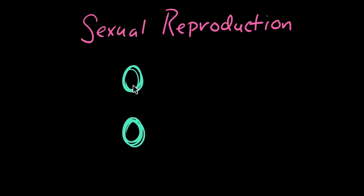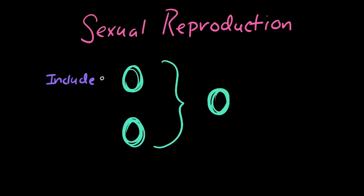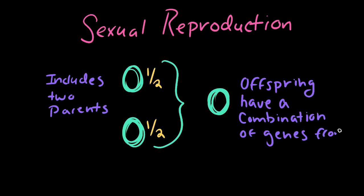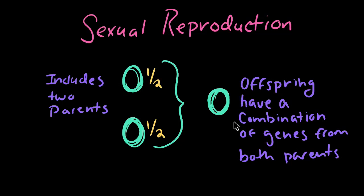Now that we've covered asexual reproduction, let's move on to sexual reproduction. Unlike asexual reproduction, sexual reproduction involves two parents producing an offspring together. This is important because it means the offspring will inherit half of their genes from one parent and half from the other. Because of this, sexual reproduction produces offspring that are genetically distinct — with a different combination of genes compared to either parent — creating tons of different possible gene combinations and a lot of genetic variation between siblings.